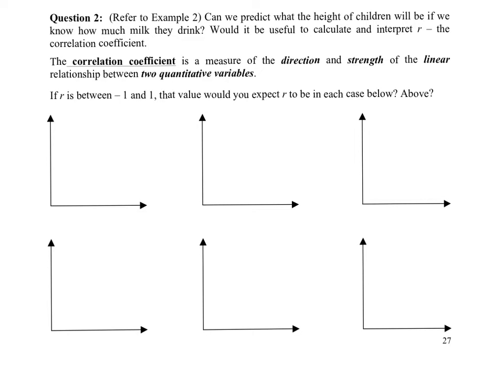Scatter plots are the best way to visualize two variables at the same time, with the intention of finding some association between those variables, or as a first step in attributing a causal relationship.